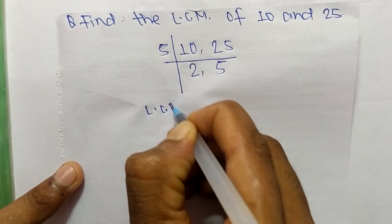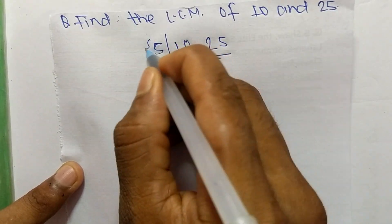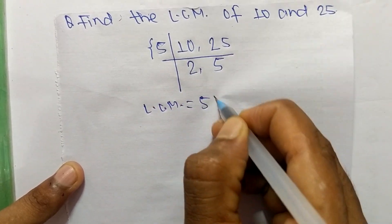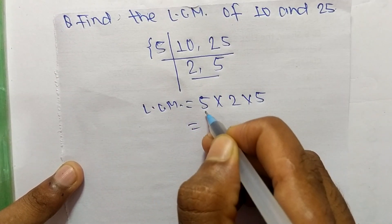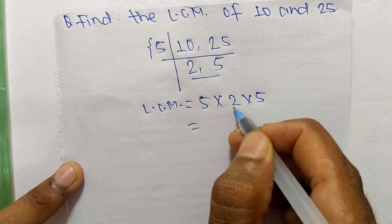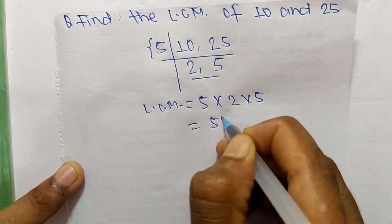So the LCM is equal to, from this part it is 5 and from this part we get 2 and 5. So 5 times 2 means 10 and 10 times 5 means it is 50.